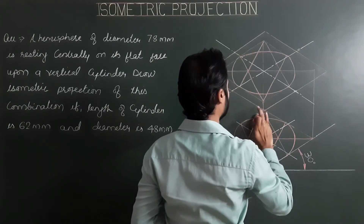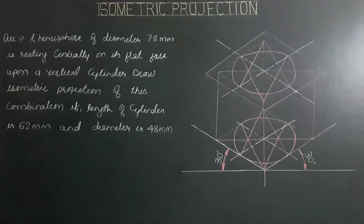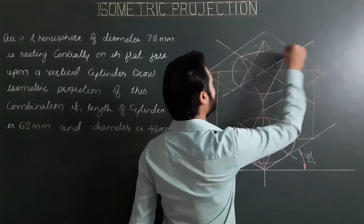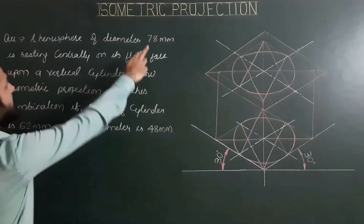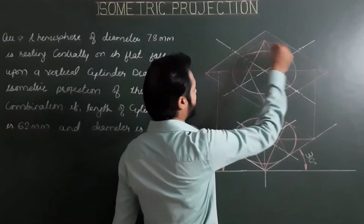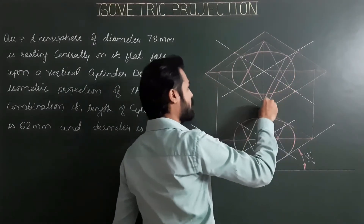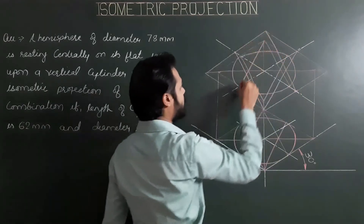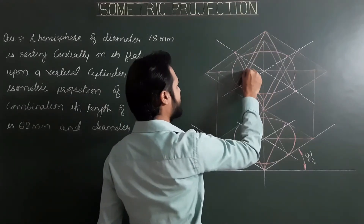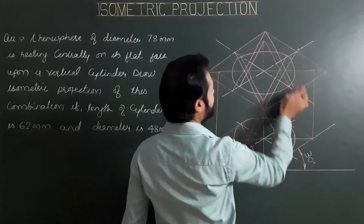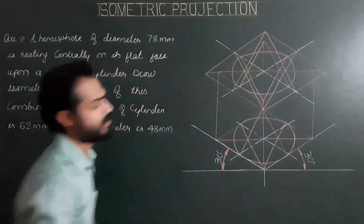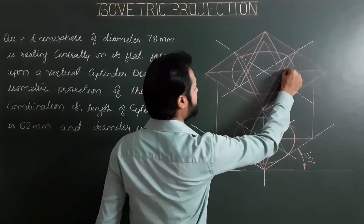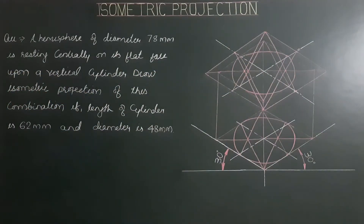We have the helping square for the flat circular face of the hemisphere. Here we apply the four-center method again — joining opposite corners and marking all four midpoints, then from opposite midpoints drawing lines to the opposite corner, repeating for diameter 78. Identifying first, second, third, and fourth centers carefully. Please mark all four centers carefully because we have two sets of helping squares and two sets of circles.